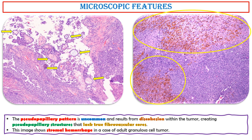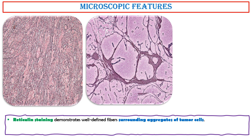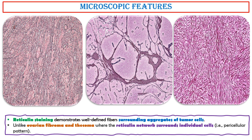This image shows stromal hemorrhage in a case of adult granulosa cell tumor. Reticulin staining demonstrates well-defined fibers surrounding aggregates of tumor cells. Unlike ovarian fibroma and thecoma, where the reticulin network surrounds individual cells in a pericellular pattern, here the fibers surround cell aggregates.